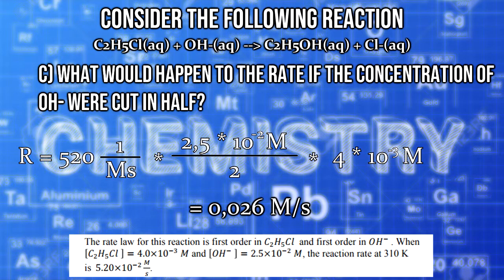After comparing this value with the initial value, it is clear that the reaction rate decreased by half. This means that by halving the concentration of one reactant, the reaction rate also decreases by half.